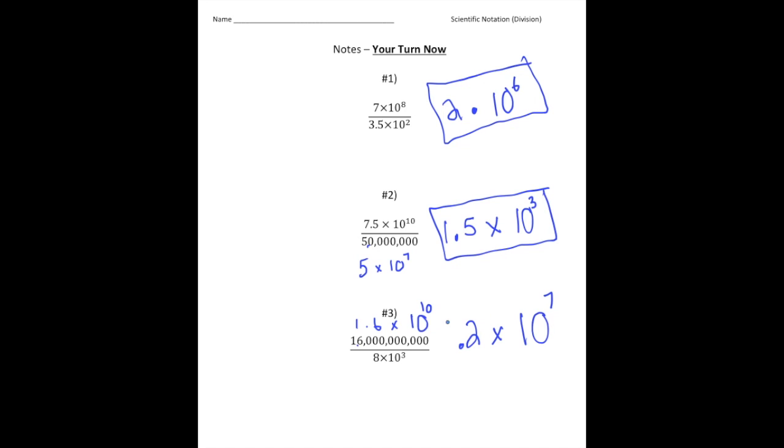But notice, again, this is not written in scientific notation yet, right? Because it's only 2 10ths. So, in order to make this between 1 and 10, I'm going to multiply this by 10. So, because I'm making this part larger, I need to make this part smaller. So, our answer is going to be 2 times 10 to the 6th power. And there it is. Alright, how did you do?